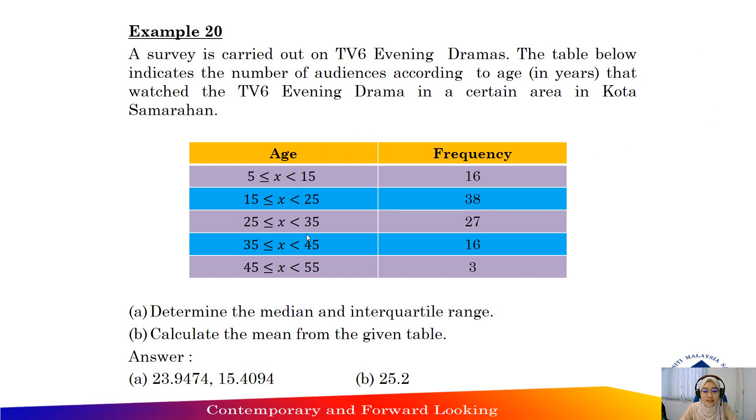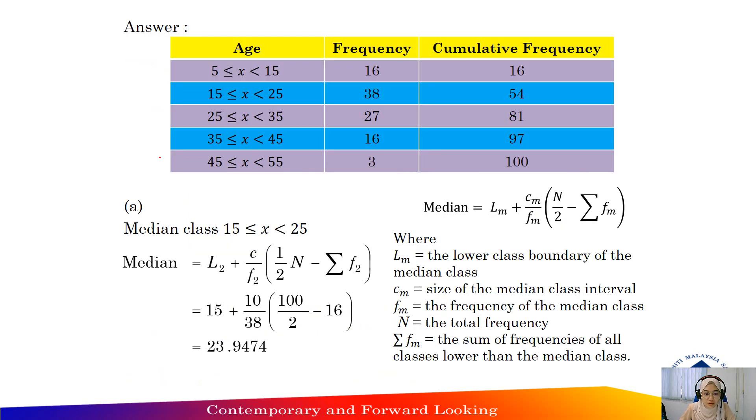Alright, so given the age and the frequency, you need to determine the median and interquartile range. The class interval here for the age is an exclusive class interval.